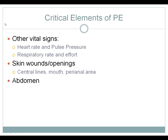Critical elements in the physical examination include vital signs — particularly heart rate and pulse pressure, which can be early warning signs of vascular collapse — and respiratory rate and effort. Examine skin wounds and openings, including the central line, mouth, and perianal area, looking for redness, pain, swelling, or tenderness. For the mouth, look for mucosal breakdown. For central lines, look for redness or drainage at the exit site and pain along the tunnel — all warning signs of central line infection.